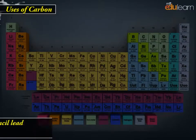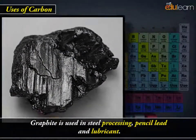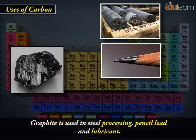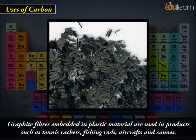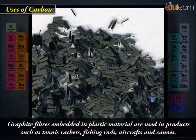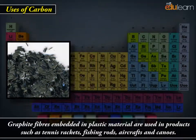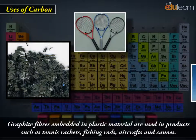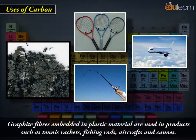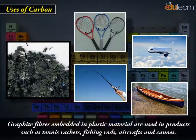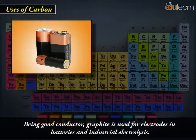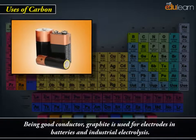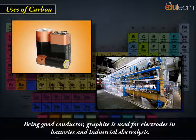Uses of carbon: Graphite is used in steel processing, pencil lead and lubricant. Graphite fibers embedded in plastic material are used in products such as tennis rackets, fishing rods, aircrafts and canoes. Being a good conductor, graphite is used for electrodes in batteries and industrial electrolysis.